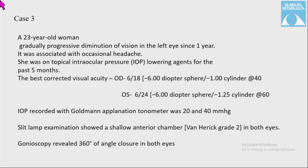Case 3: A 23-year-old woman with gradual progressive diminution of vision in the left eye for one year, associated with occasional headache, on topical IOP-lowering agents for five months. BCVA was 6/18 right eye and 6/24 left eye; IOP was 20 and 40 mmHg by Goldmann applanation tonometry. Slit-lamp showed shallow anterior chamber with Van Herick grade 2 in both eyes. Gonioscopy revealed 360 degrees of angle closure in both eyes.